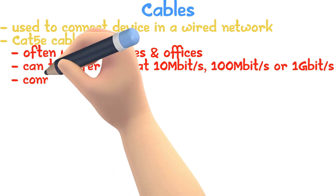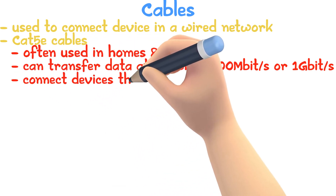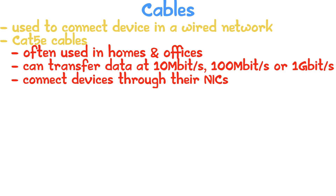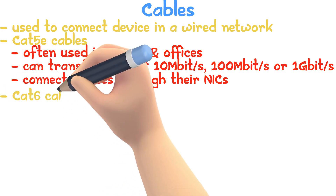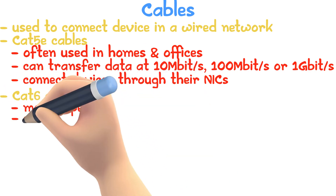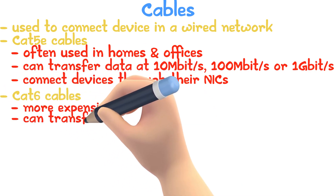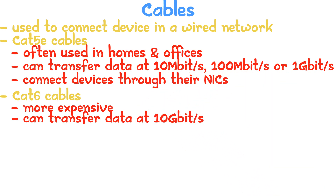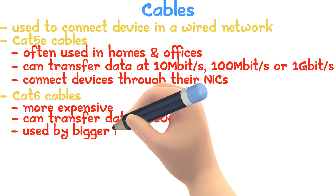Cat5e cables connect devices through the NIC. Cat6 cables are more expensive and can transfer data at a speed of 10 gigabytes per second, so they are used more by bigger businesses.